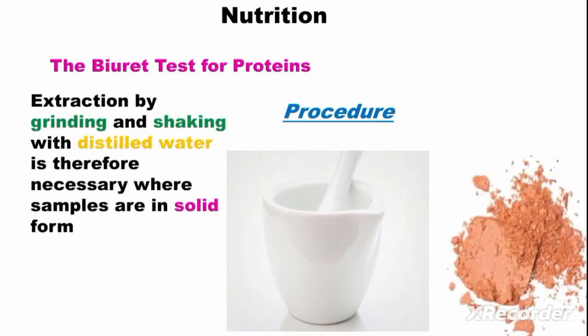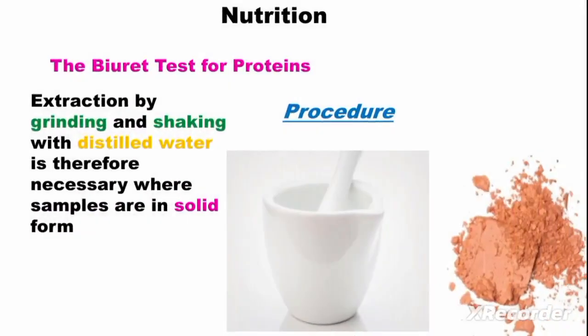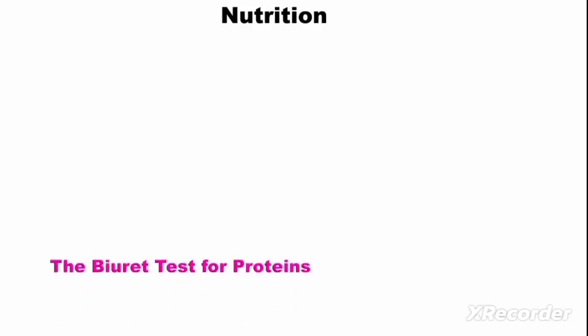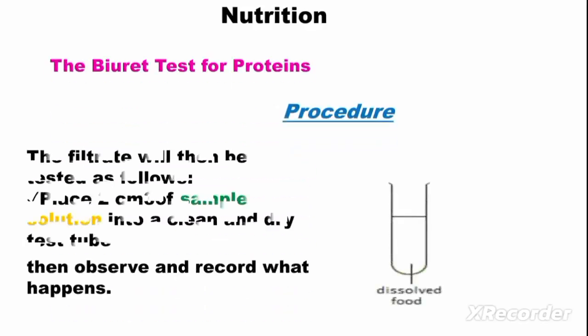If the sample that has been given is in solid form, there is need for us to grind it using the apparatus given on the screen. So in case you are given the sample in solid form, you need to grind it, mix it with distilled water, and shake. Then we add two cubic centimeters of sample solution into a clean and dry test tube to avoid giving wrong results. Then we observe and record what happens.